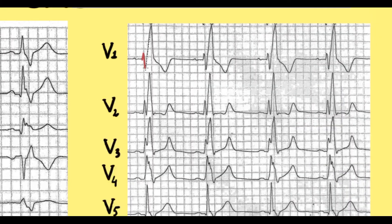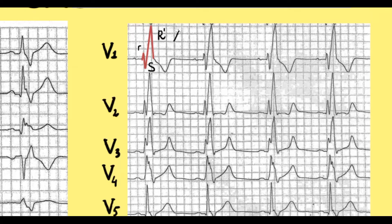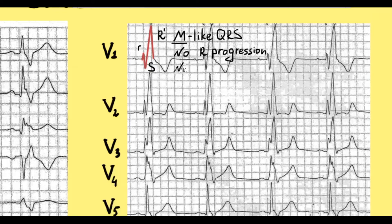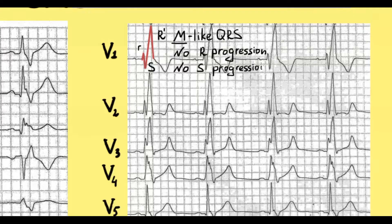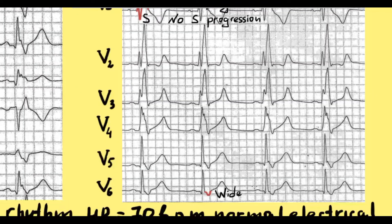QRS has abnormal morphology especially in chest leads. In V1 QRS complex is RSR or M-like QRS. There are no normal R wave and S wave progression. In V6 S wave is wide.